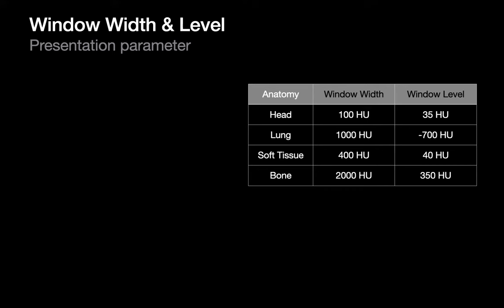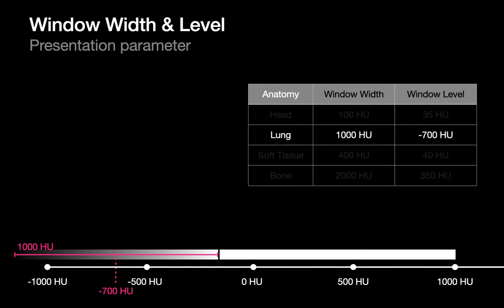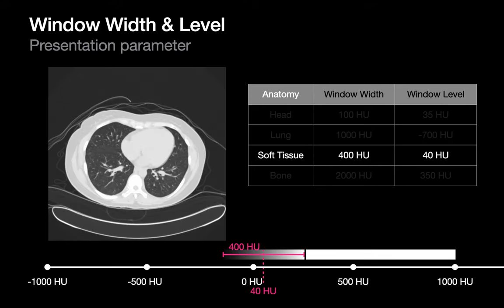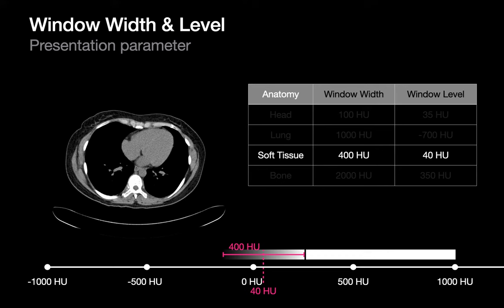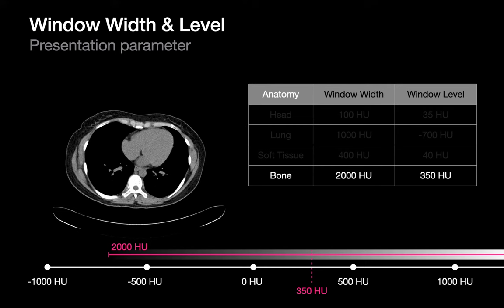The typical window width and level combinations vary by organ. For lung, we prefer a wide ~1,000 HU window centered at around −700. Wide windows (above 500 HU) are used for organs with a wide attenuation range like the lung, while narrow windows (no more than 300 HU) are used for organs like the liver. On a soft tissue window, most lung pixels — with attenuation values between −1,000 and −160 — appear as pure black, making subtle lung anatomy invisible. For bones, we prefer a wide ~2,000 HU window centered at around 350 HU.